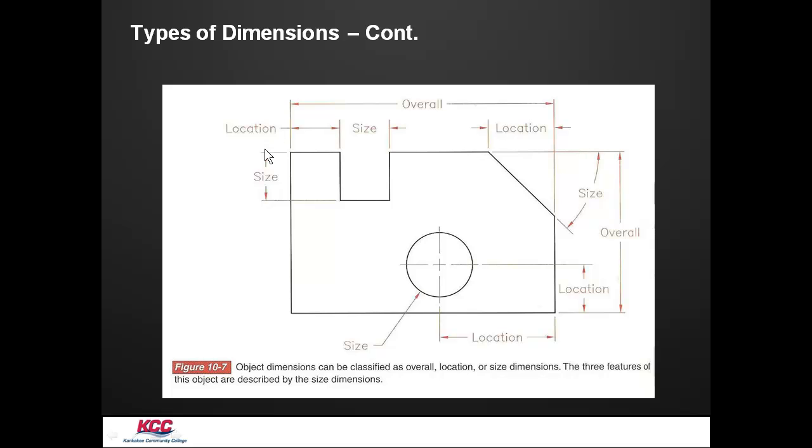Over here in the notch, we tell how far away from the corner the notch is. Now, our third step is the size. In the circle, we tell the size of the drill bit for the hole. Usually in this case, it would be the diameter. Over here in the size, we gave it the angle. And over here in the size, we gave it the length and the height. So all three of these add up, the overall, the location, and the size, to be able to dimension an object correctly.